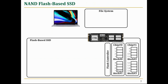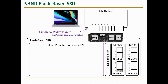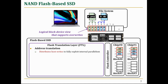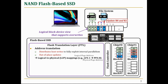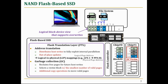An SSD commonly employs a special firmware called FTL to provide backward compatibility with hard disk drives that support overwrites. FTL distributes host writes to Flash chips to fully exploit internal parallelism of the SSD. If a file system updates logical pages, FTL performs out-of-place updates using free pages. FTL should maintain mapping information between logical and physical pages to service future read requests. To sustain free pages for future writes, FTL triggers garbage collection when it runs out of free pages, selecting a victim block with the least number of valid pages, since valid pages must be moved before erasing. FTL also keeps track of the status of each page.